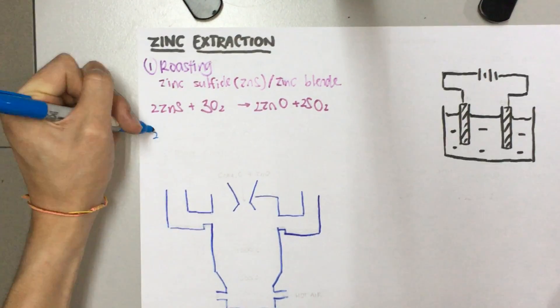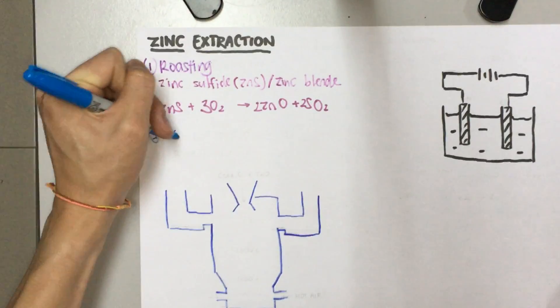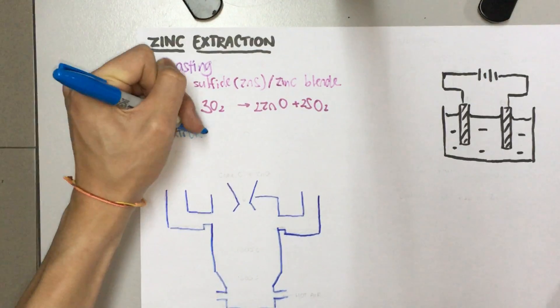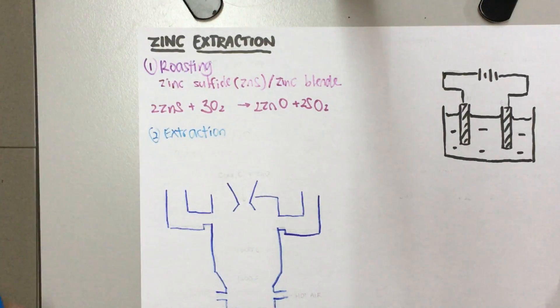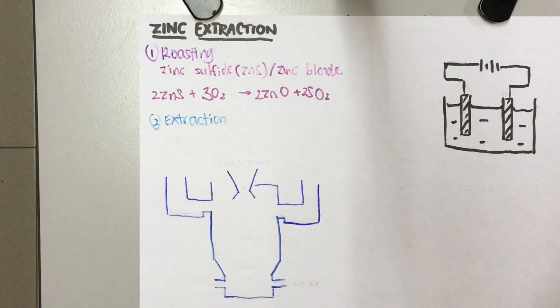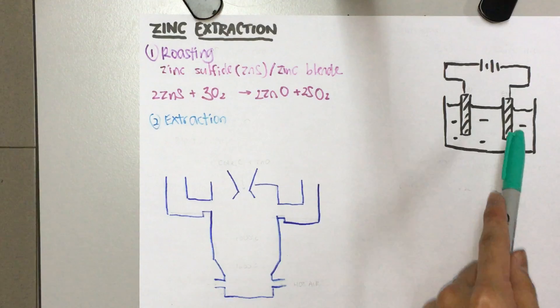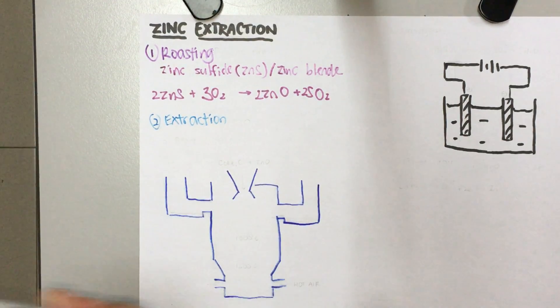The next step is actually the extraction process. And I have 2 methods for this. The first method is via the blast furnace, and the second is via electrolysis. I'll go through each of them.